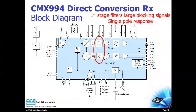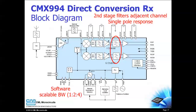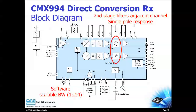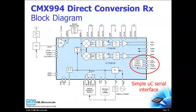The on-chip filtering is divided into two parts. The first filtering stage removes large blocking signals and the second filtering stage removes adjacent channel interferers. The bandwidth of the filtering is software scalable, so one hardware configuration can support three channel bandwidths. A simple serial interface allows straightforward connection to your host controller.